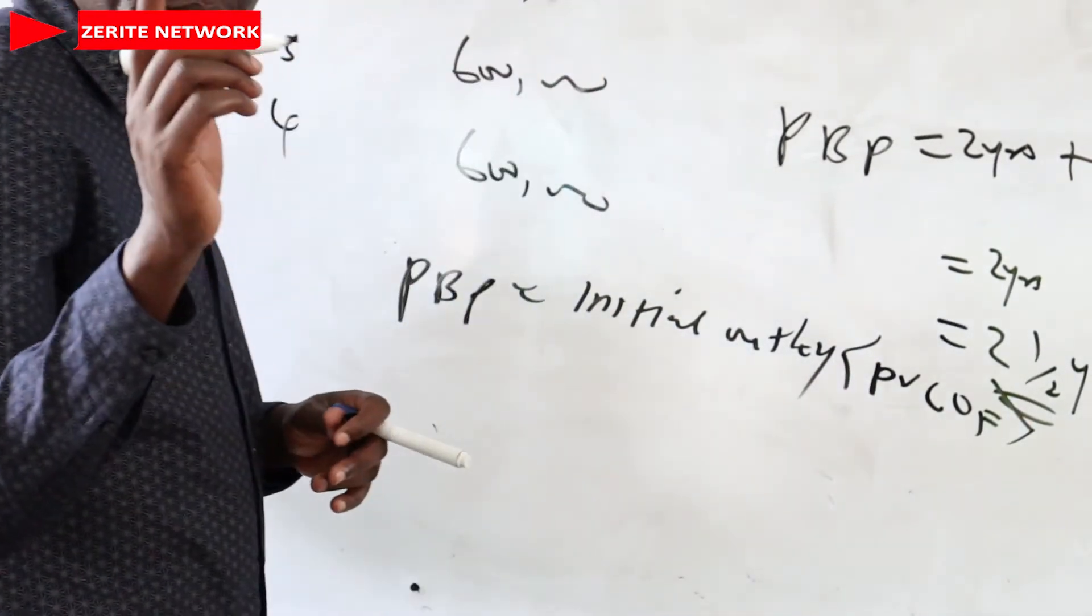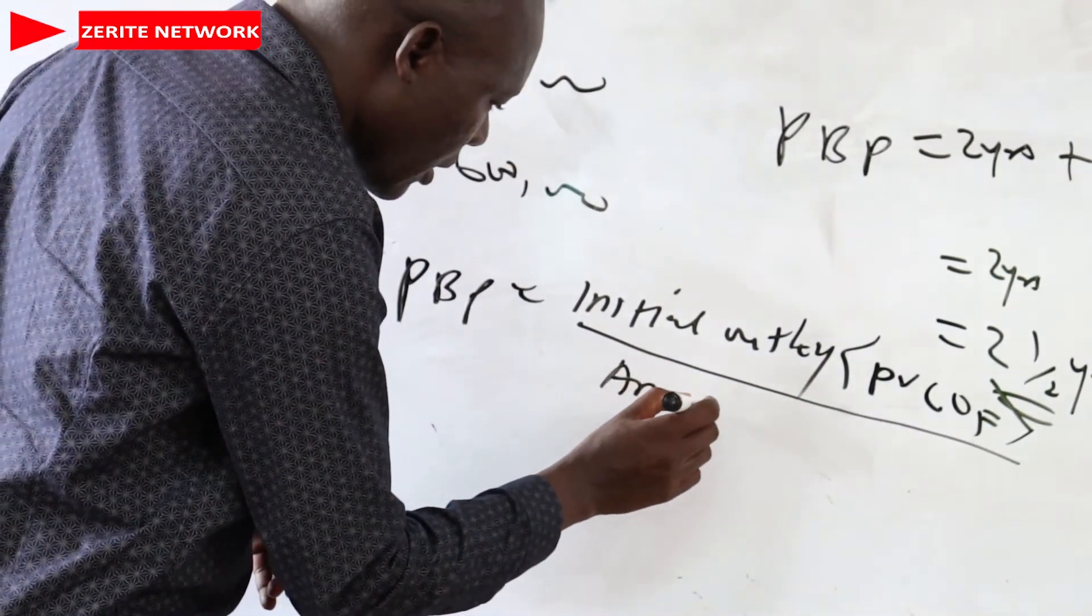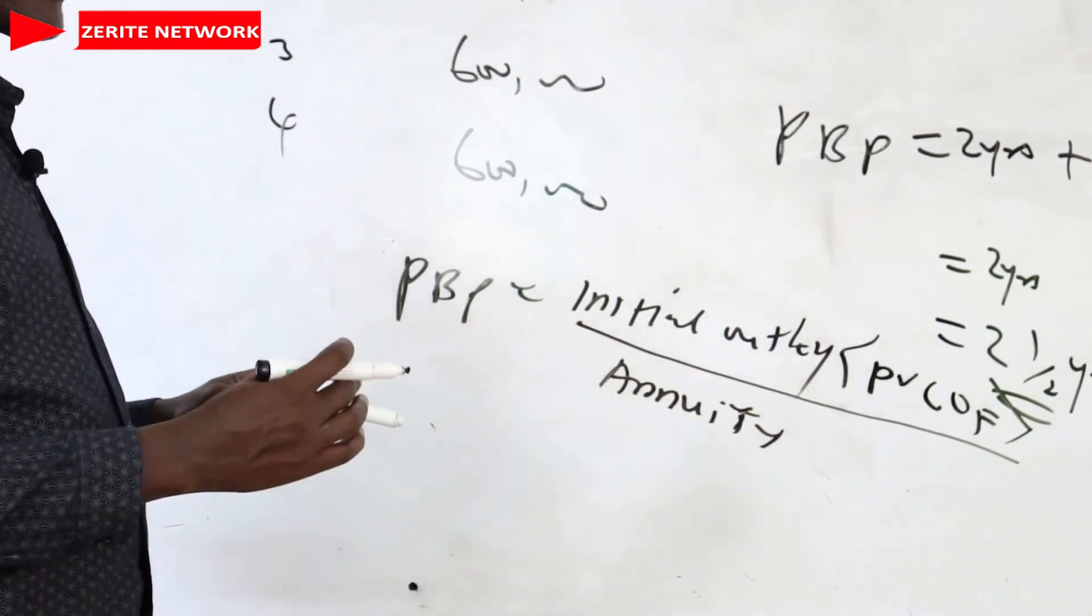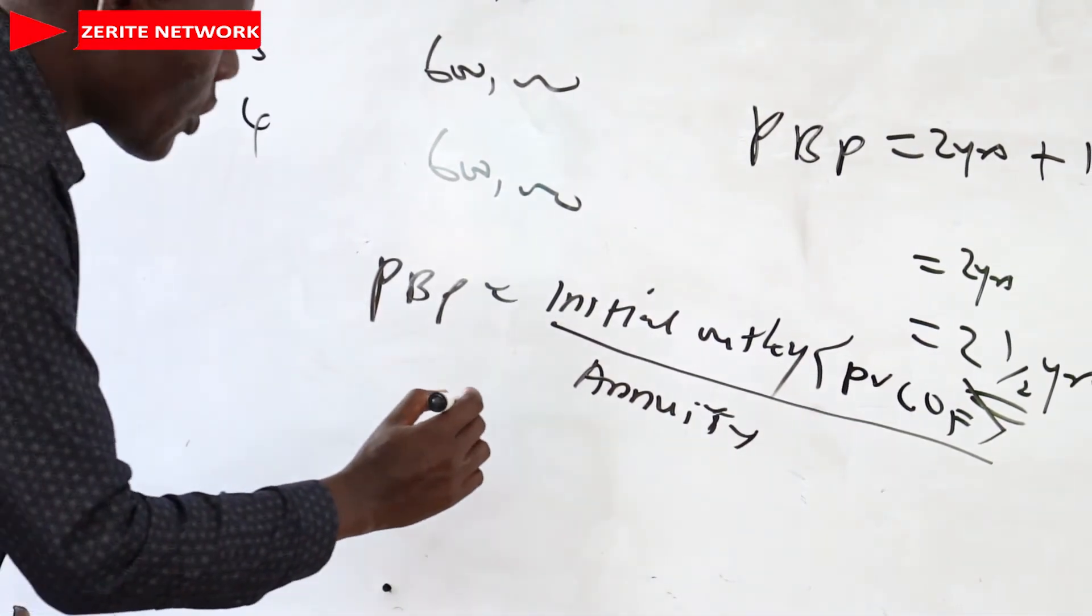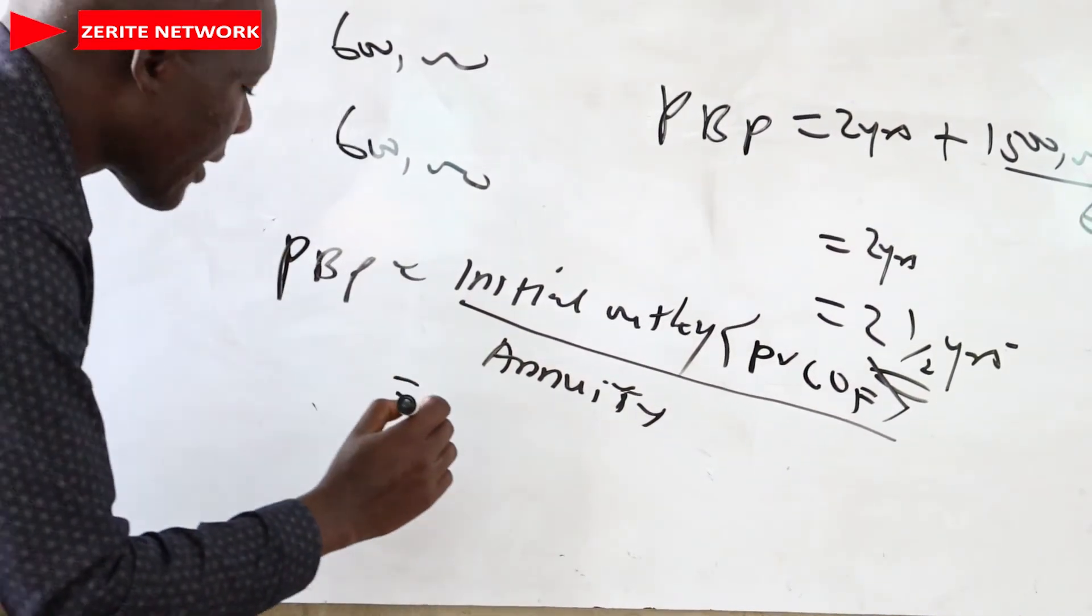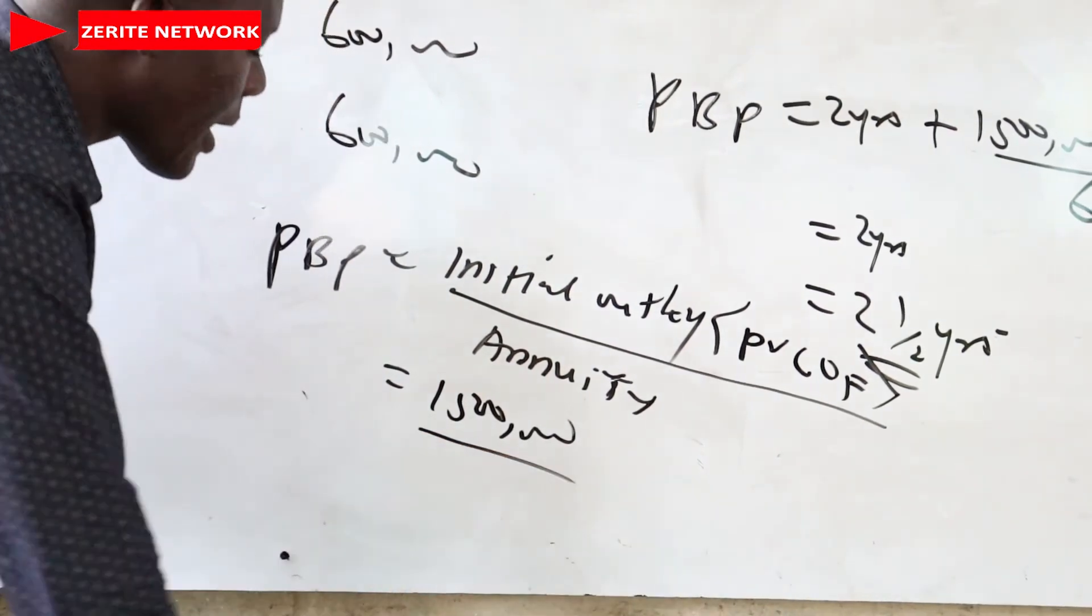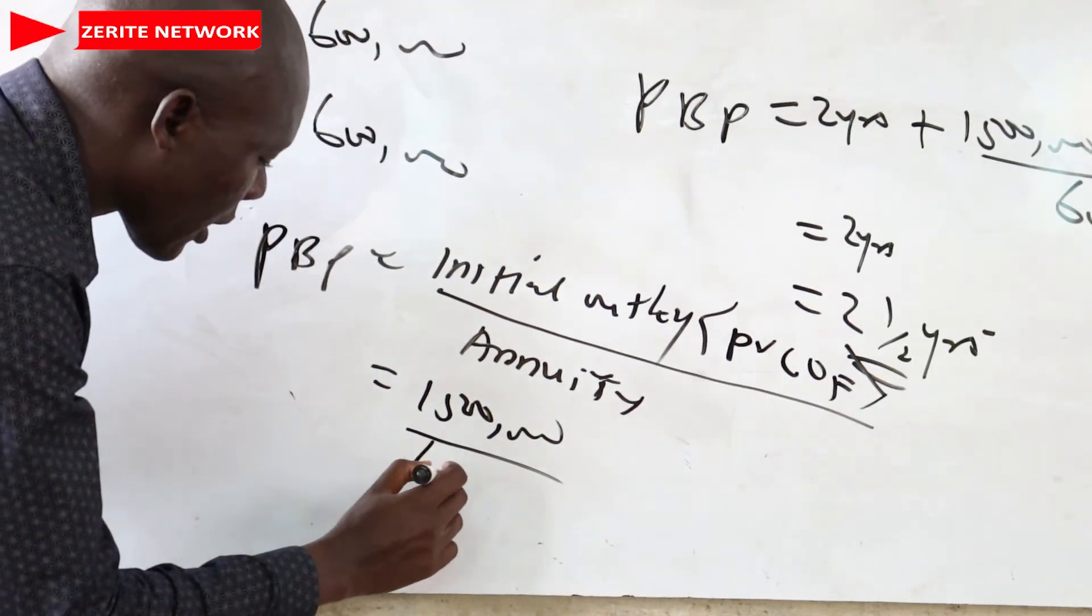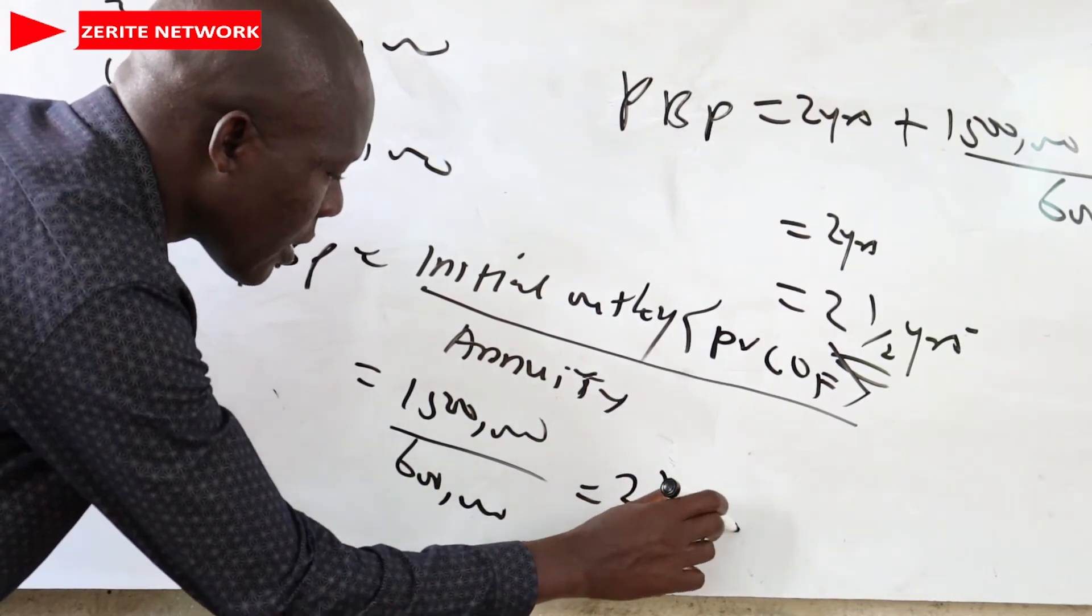That is to say the amount you invested over the annuity. The annuity is this amount which is repeating itself for the rest of the period. So this one will be the initial outlay is the amount we invested for this company, which was $1,500,000. We divide by annuity. The annuity is $600,000 over $600,000. You will get two and a half years.